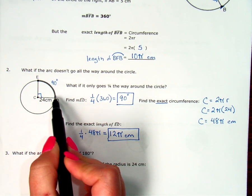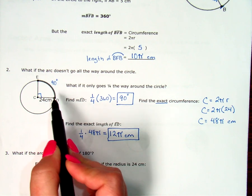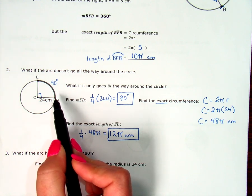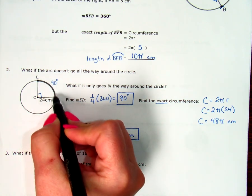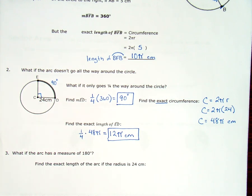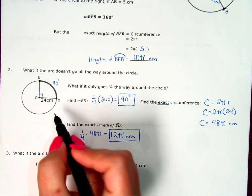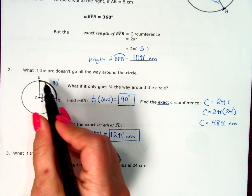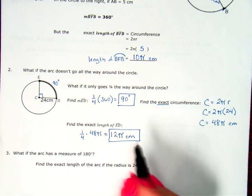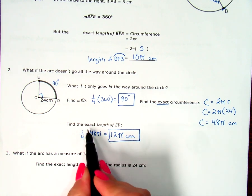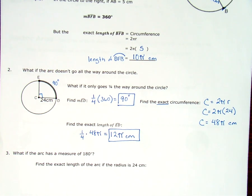This 90-degree measure is the same for every one-fourth of every circle. But if I had a little ant walking from D to E along the edge, how far would it have to walk? It would have to walk 12π centimeters. To get an approximate answer we'd do the multiplication, but since this asks for exact, I leave it as 12π.